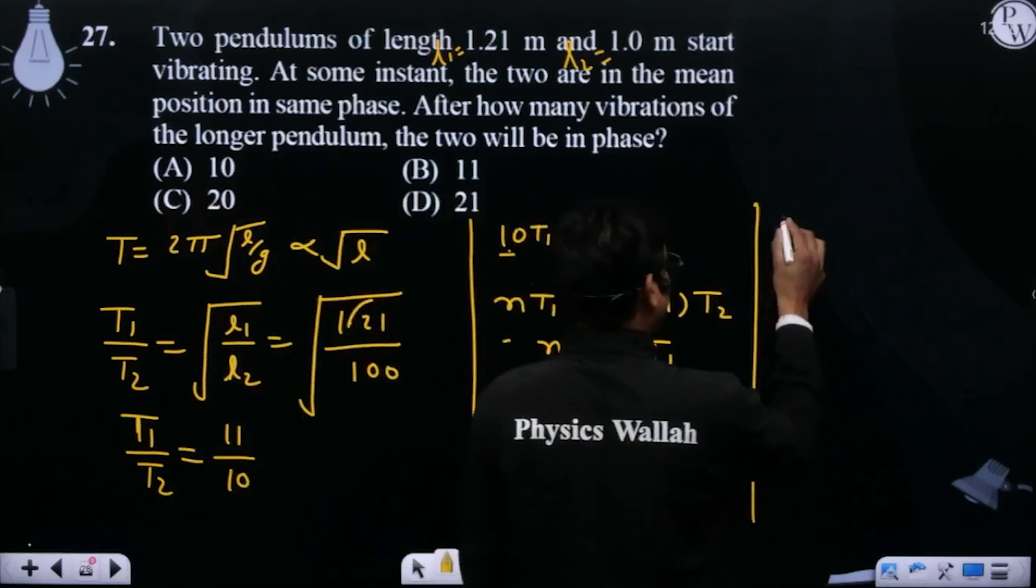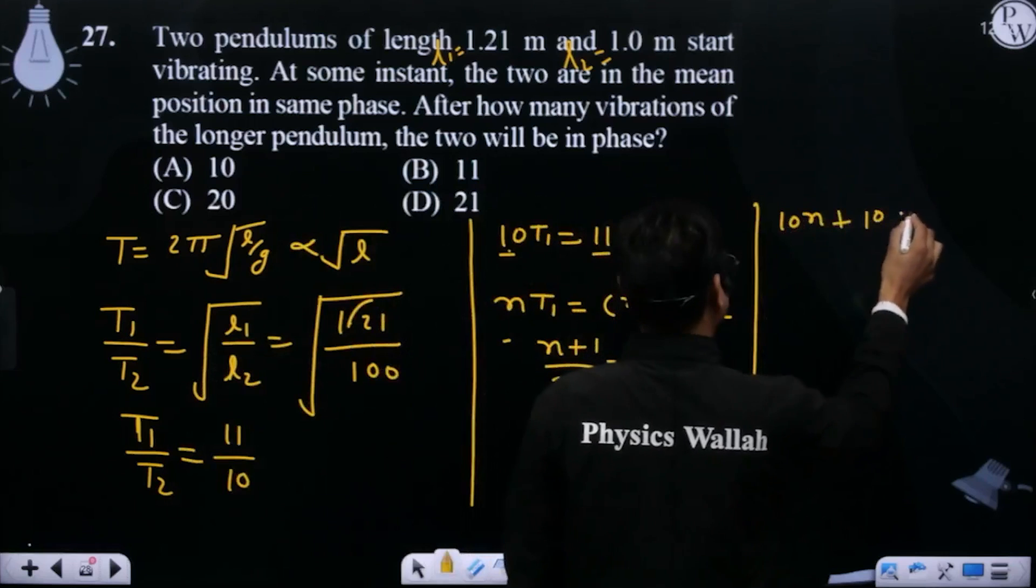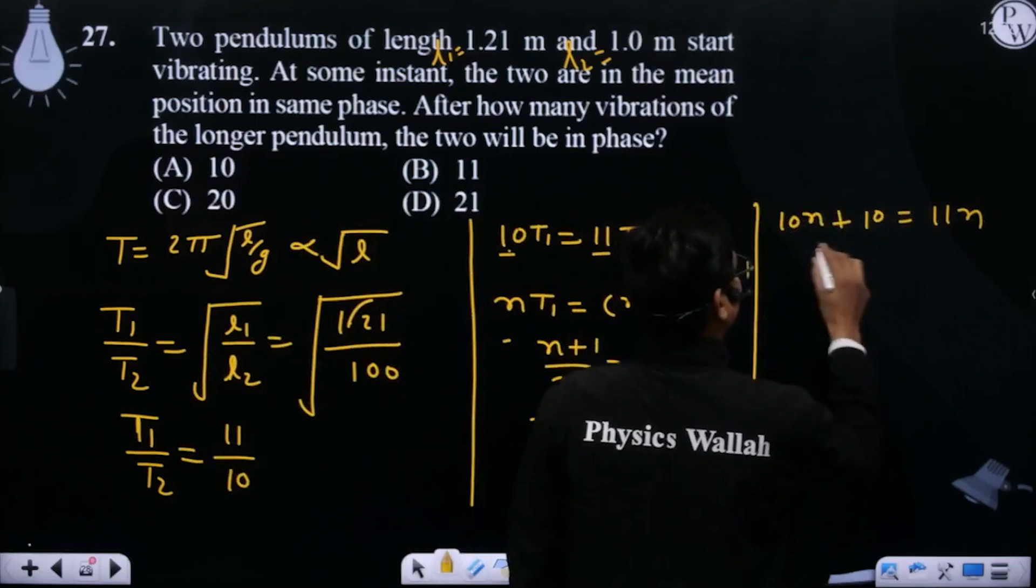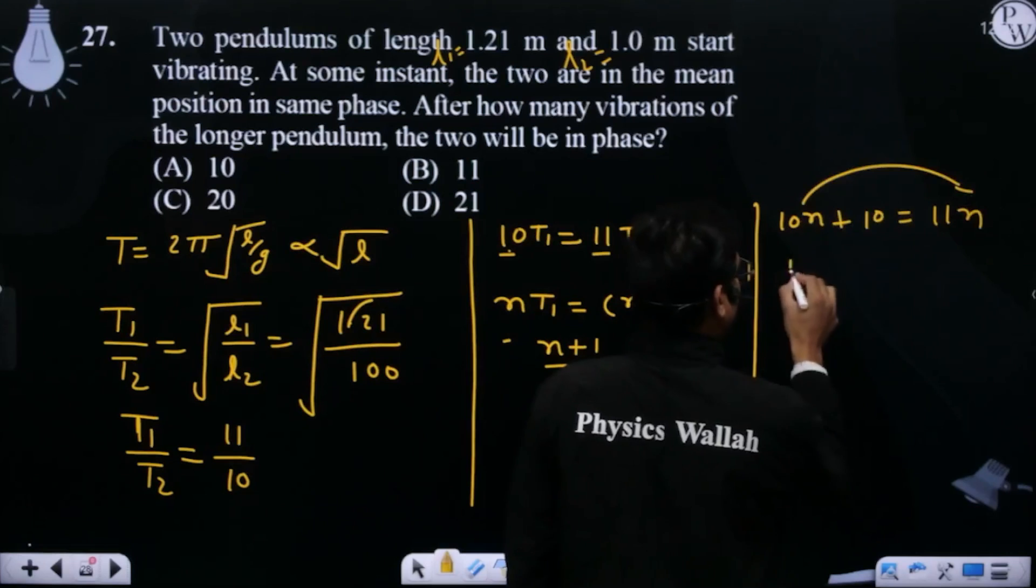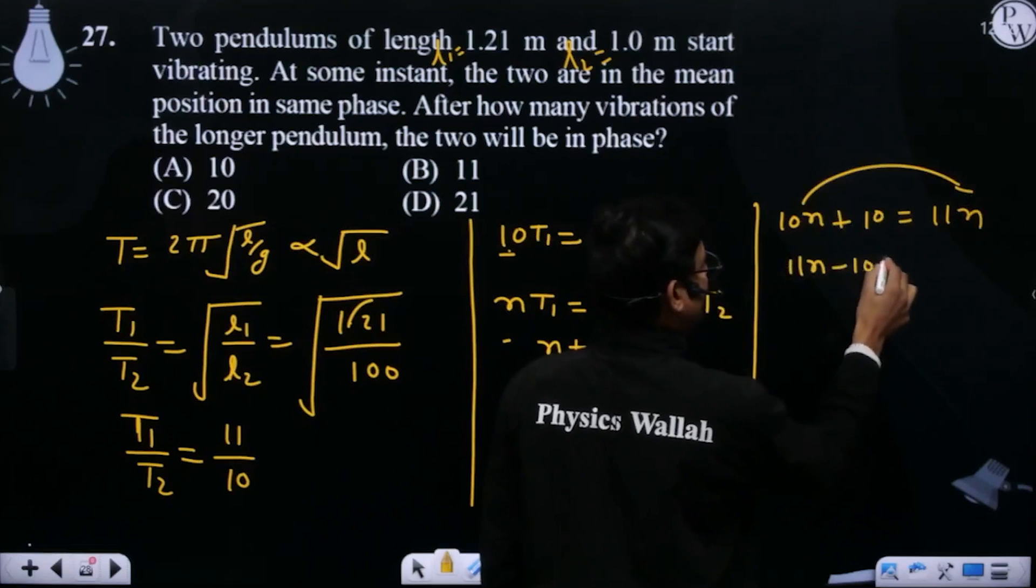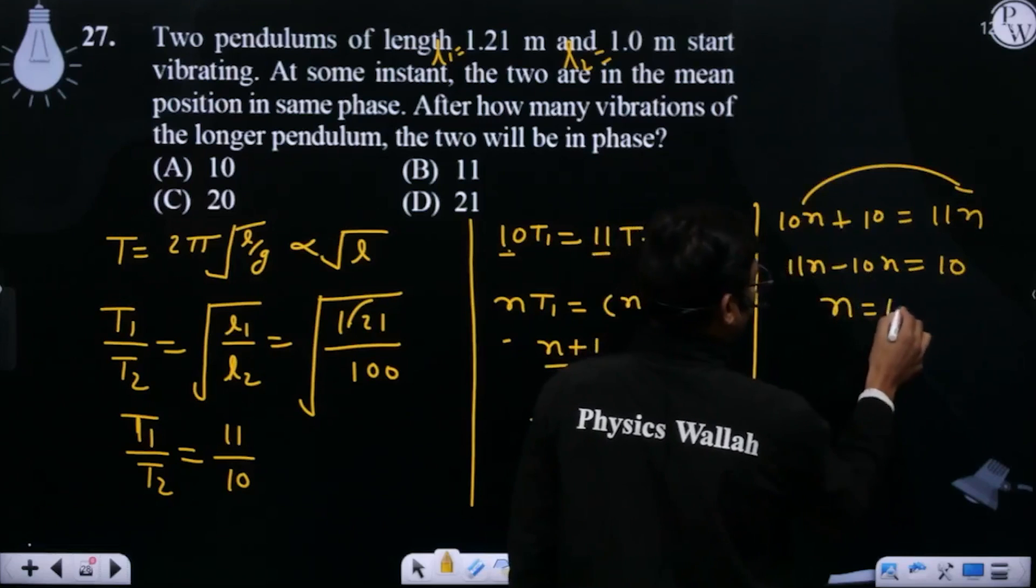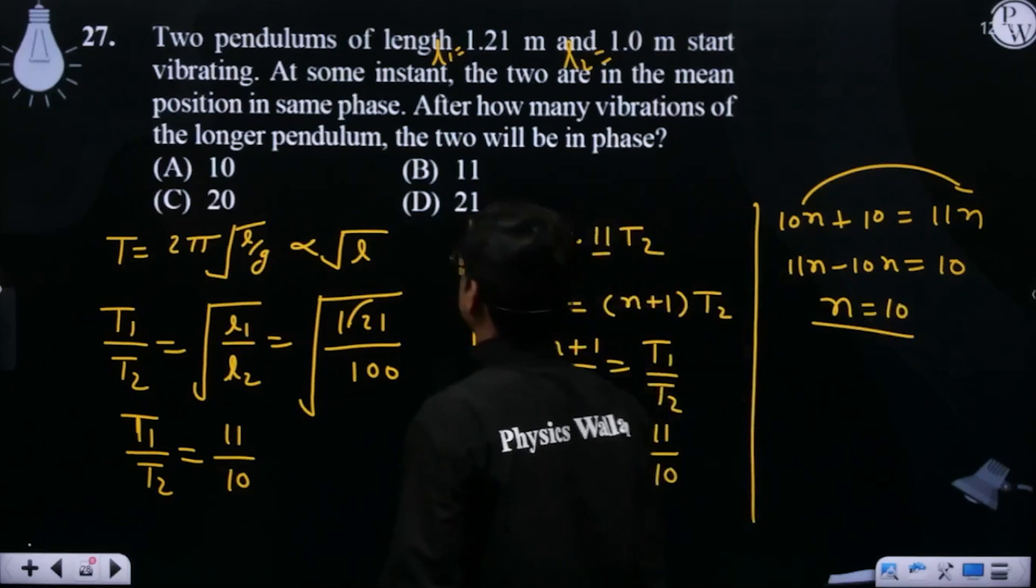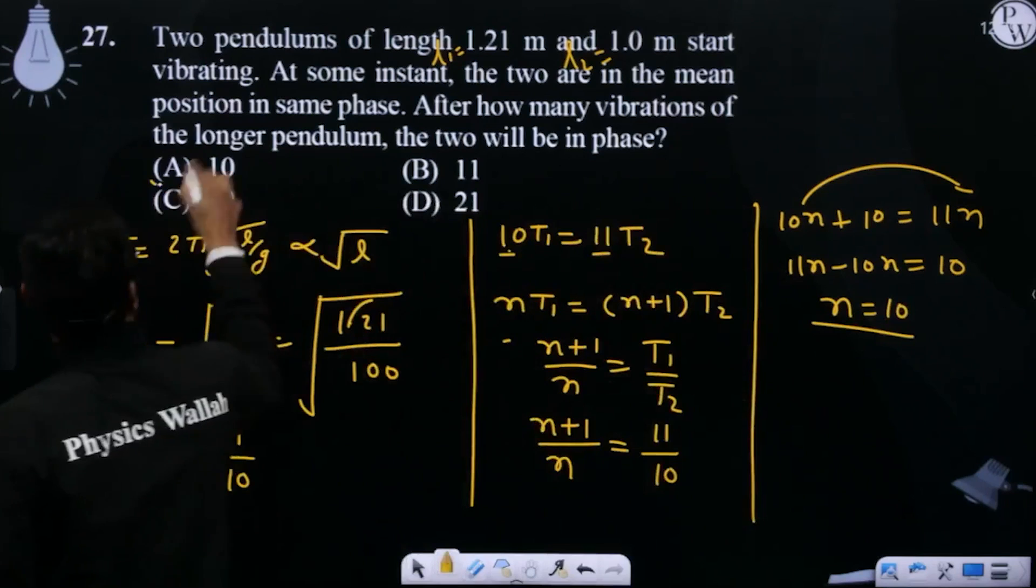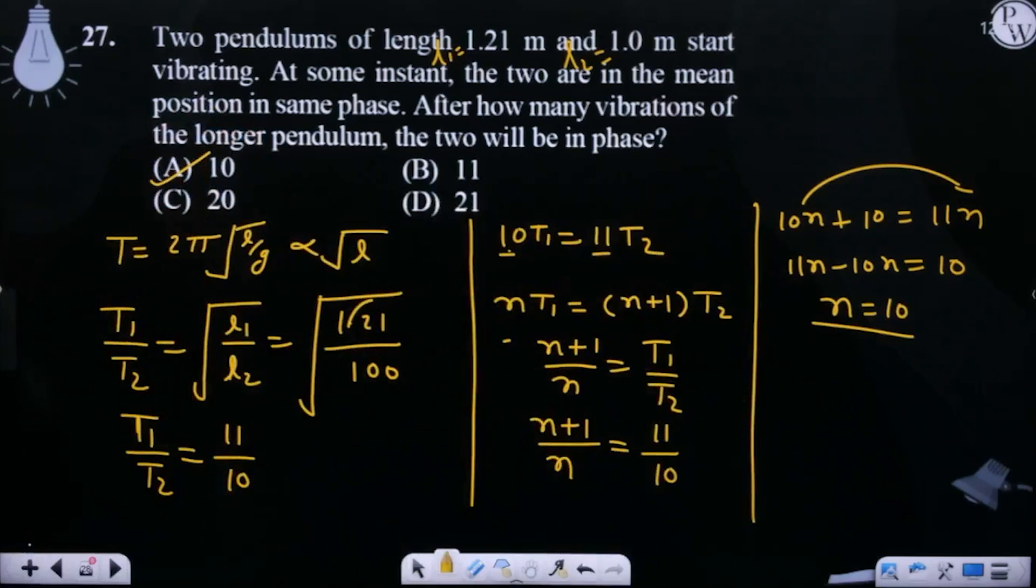11n - 10n = 10, so n = 10. The answer is option A.